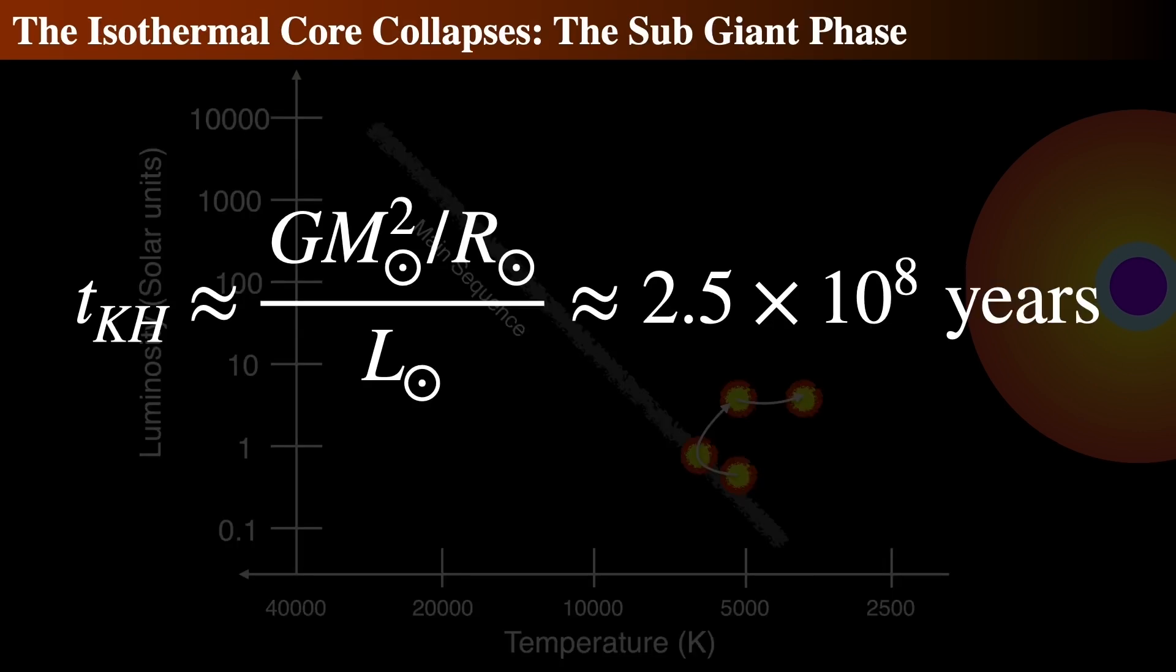The end of the road for this arrangement happens when the isothermal core reaches 8% of the mass of the entire sun. That's where our limit of the additional 1.5 billion years comes from. Now the sun is 11.4 billion years old, and the core can no longer support the weight above it. It now collapses on the Kelvin-Helmholtz timescale.